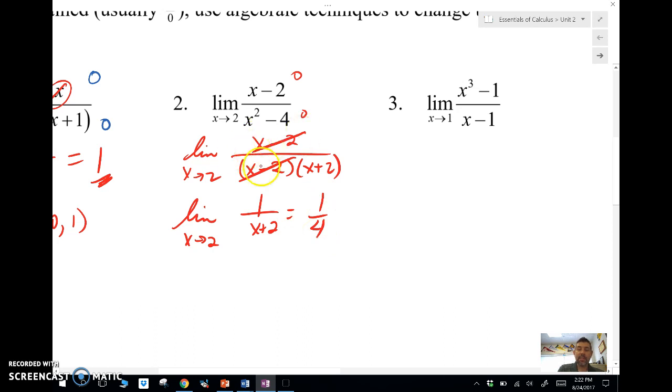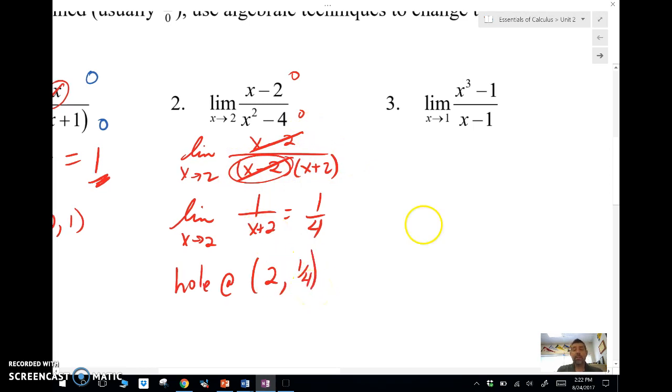Since I canceled something out, I'm going to have a hole in the graph. My X value here is going to be two because I just take the bottom here, X minus two equals zero. Solve that, and I'm going to plug two back in and I'm going to get one fourth. So I've got a hole there.